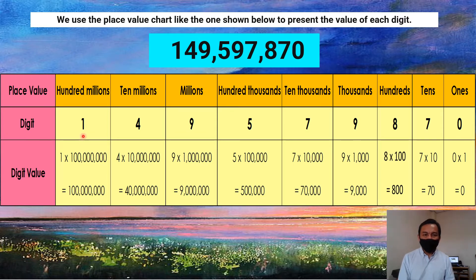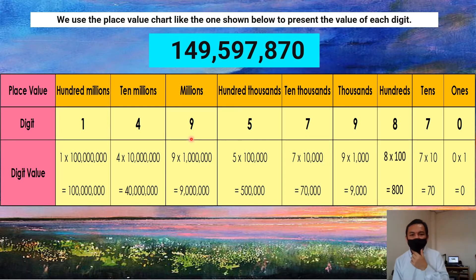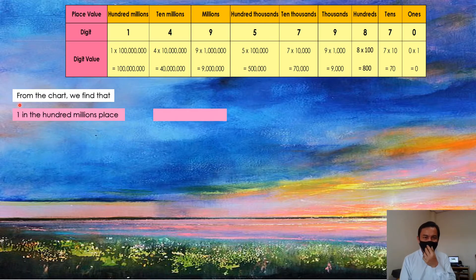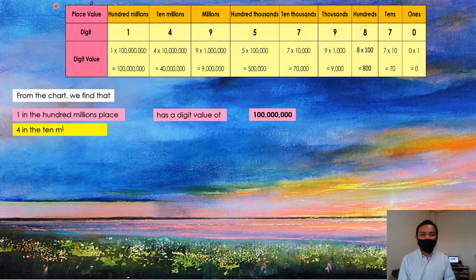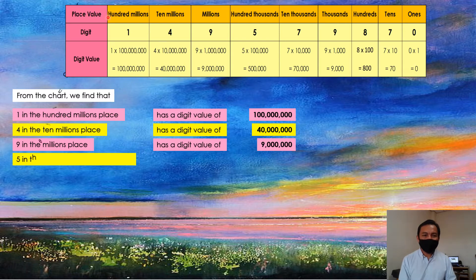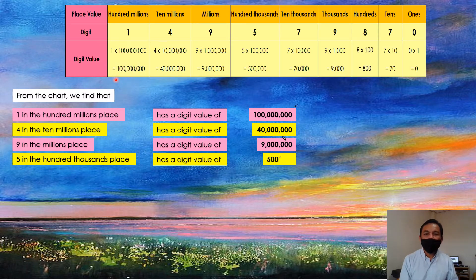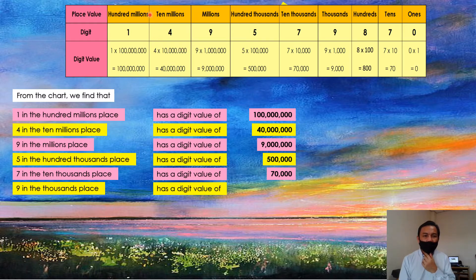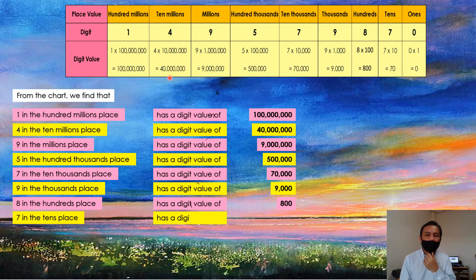The digits from this number are 1, 4, 9, 5, 7, 9, 8, 7, and 0. From the chart, we find that 1 in the hundred millions place has a digit value of 100 million. And 4 in the ten millions place has a digit value of 40 million.